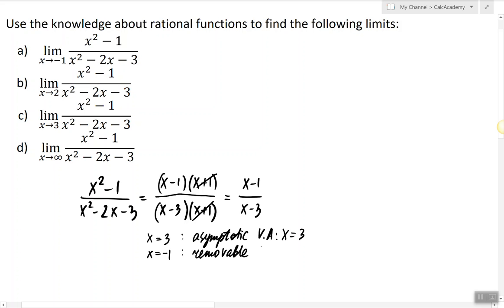What does that mean for limits? At x=-1, the limit of the original function equals the limit of the reduced form. Now we can just plug in the value and compute the output: -2 divided by -4, which is 1/2.